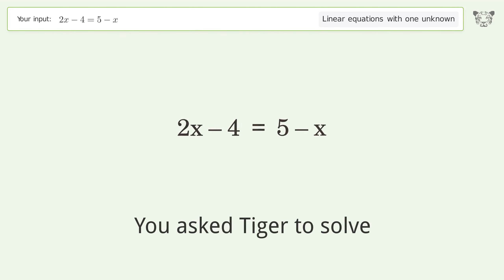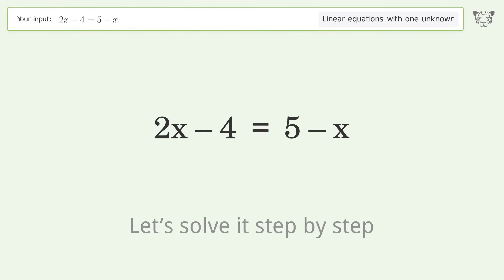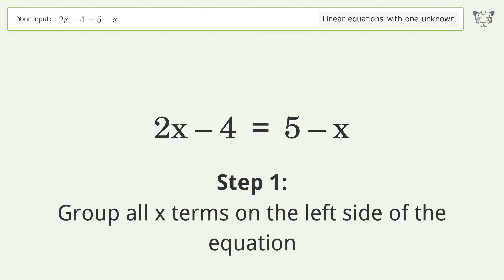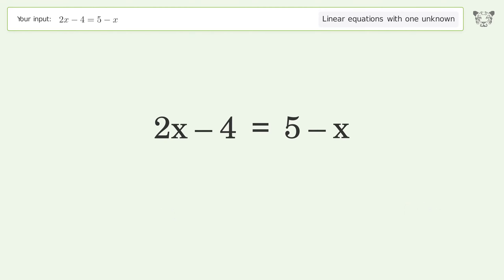You asked Tiger to solve this. It deals with linear equations with one unknown. The final result is x equals 3. Let's solve it step by step. Group all x terms on the left side of the equation. Add x to both sides.